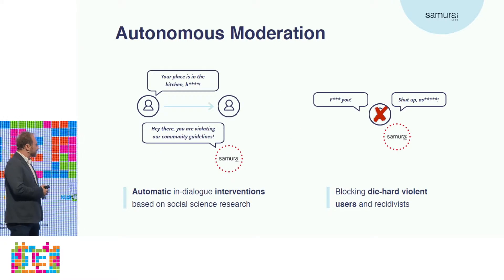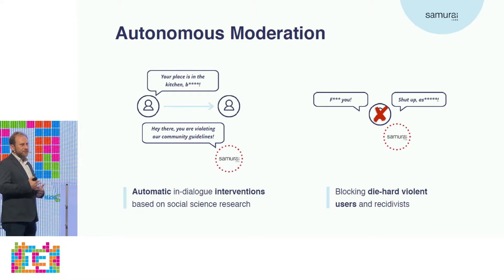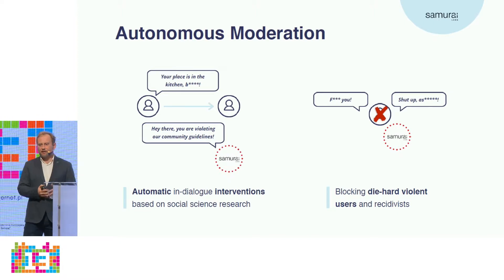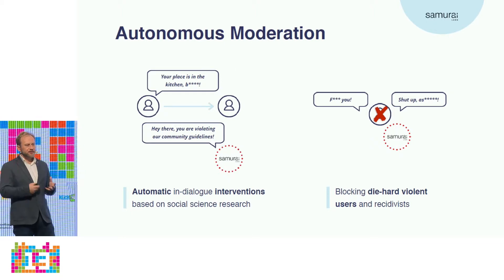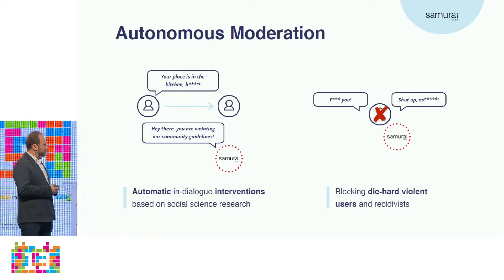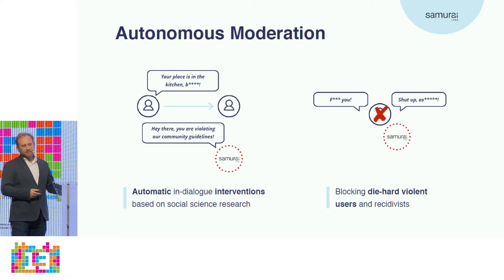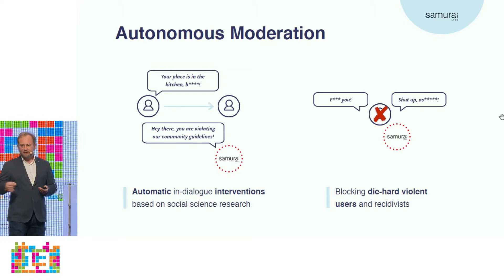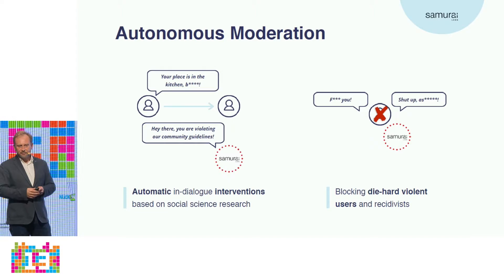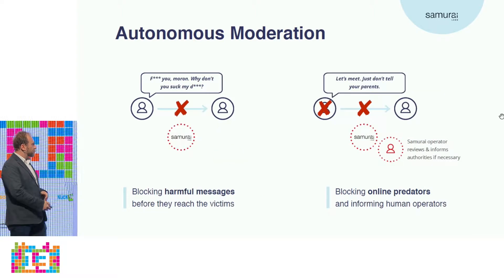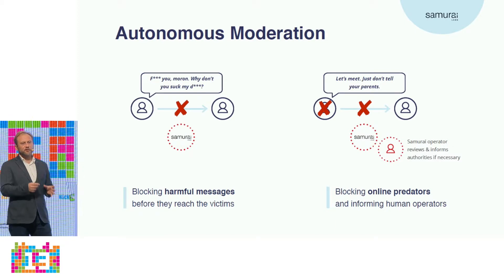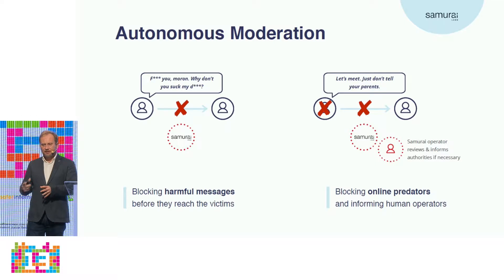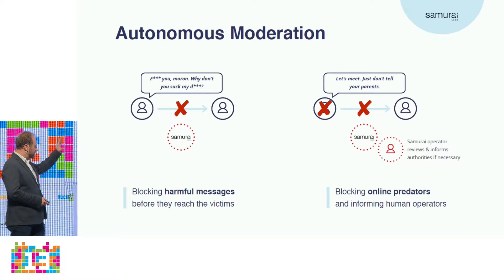When someone is attacking others, we make social interventions, saying 'hey, why are you doing that?' We work with norms and different approaches, and the artificial intelligence figures out what works and what doesn't. For die-hard users who keep attacking, we can block them automatically and remove them from the equation. Most importantly, we block harmful messages before they reach a child — that's what the artificial intelligence does.